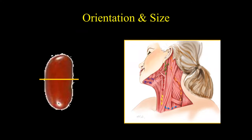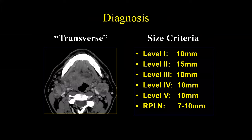The lymph nodes are shaped like a kidney bean but have different orientations. Levels 2, 3, 4, and 5 lymph nodes have a craniocaudal orientation, while level 1 and supraclavicular lymph nodes are oriented differently. Because of this, size criteria vary: 10mm for level 1, 15mm for level 2, 10mm for level 3, 10mm for level 4, 10mm for level 5, and 7–10mm for the retropharyngeal lymph nodes.